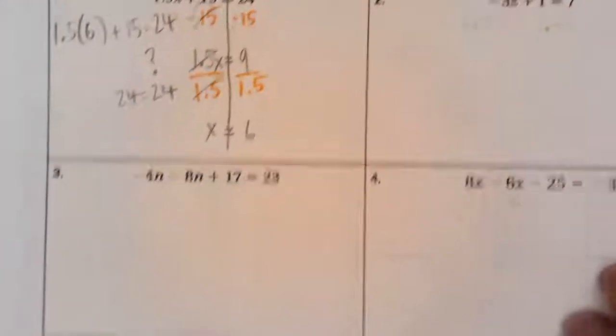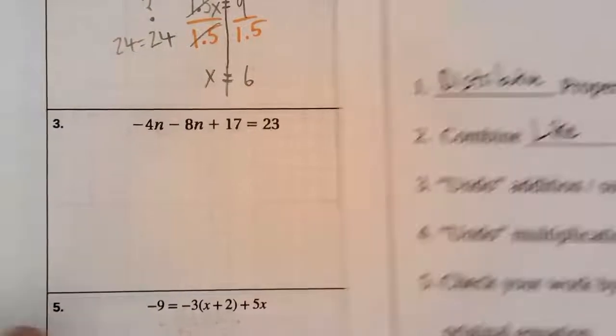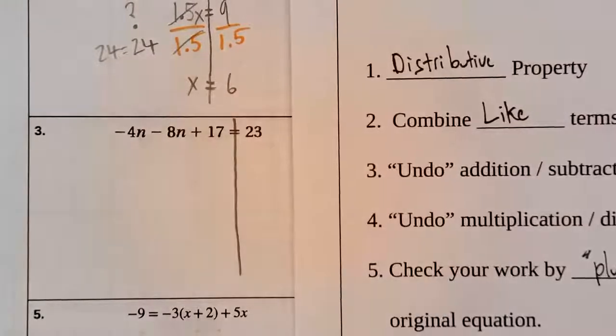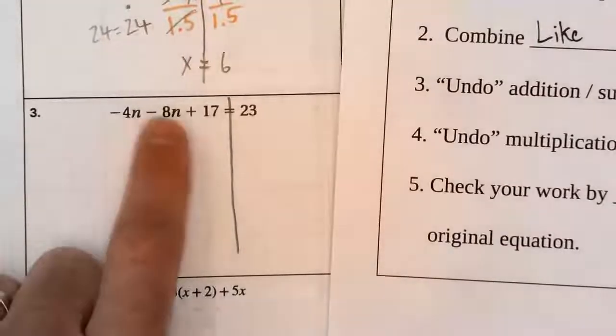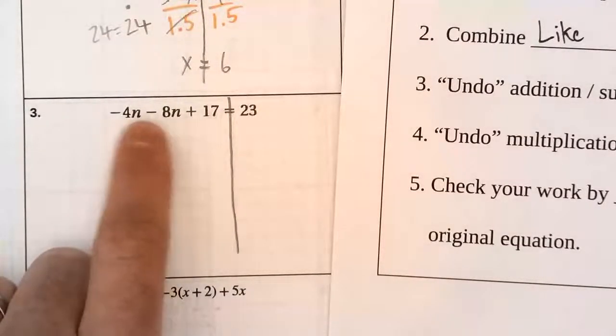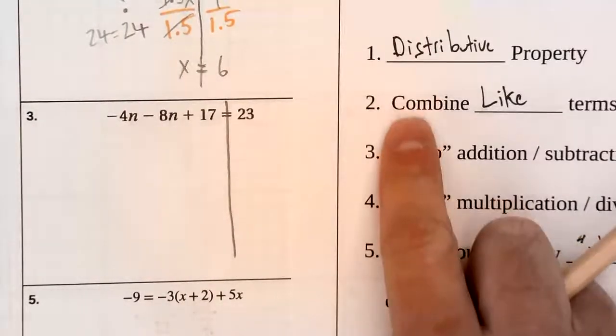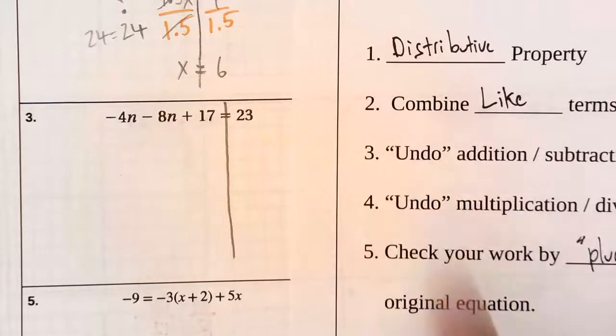I'm going to go ahead and do number three in the same video. So this time, I am going to need to combine like terms. So I'm going to glance at my steps again. And the goal is to get the variable by itself. And in this case, there's two different variable terms, which is why I'm going to immediately combine like terms.